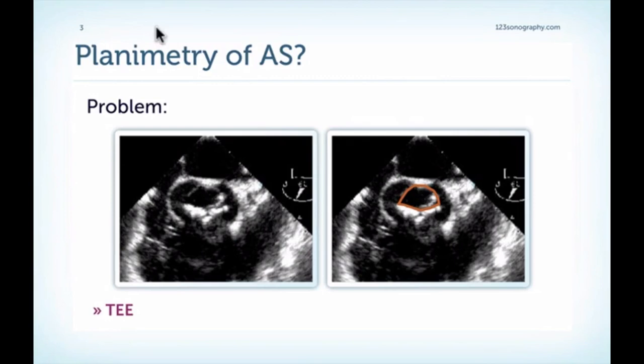Importantly, we also have to remember that the effective orifice area of the valve is not necessarily the anatomic or so-called geometric area, due to the pressure and turbulence development at the stenotic valve. We should also consider that the calcified valve can be funnel-like, making it difficult to assess the actual narrowest part of the valve. However, planimetry can be very useful in cases where Doppler gradients are unreliable or unavailable, and we can use it as an add-on in unclear cases.